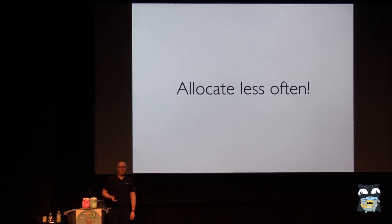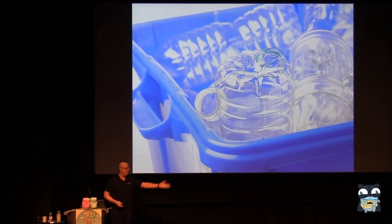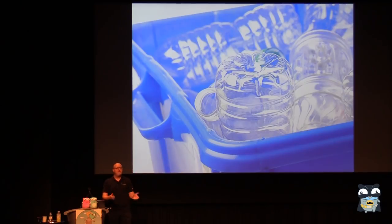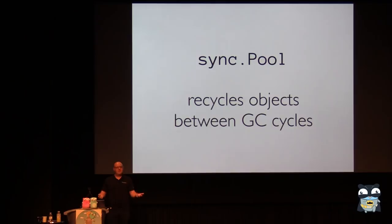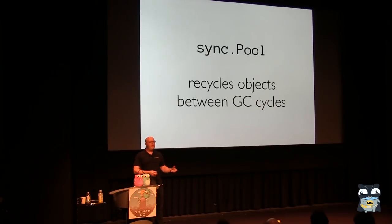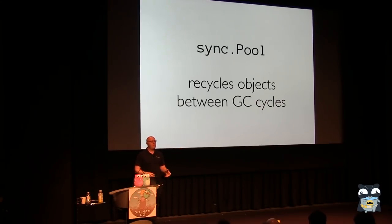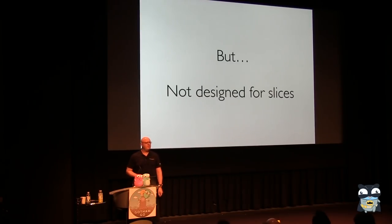So what do we want to do? We want to allocate less. How do we allocate less? Well, we'll recycle — rather than dropping things, we put them into a nice box where you can collect and use them later. The Go core library provides a nice type for this called the sync.Pool. Sync.Pool is really useful — it recycles objects between garbage collection cycles. When the garbage collector runs, the sync.Pool gets tossed out; it's a cache. But in between, you have objects there that you can reuse.